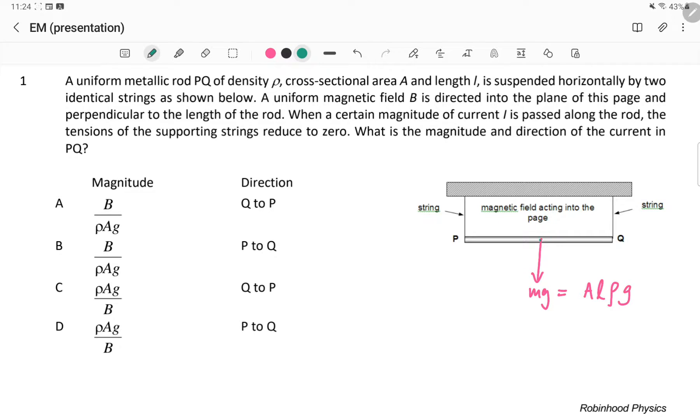The other force that is supporting this must be the magnetic force, which is equal to BIL. Therefore, we equate these two. So you have BIL equals ALρg.